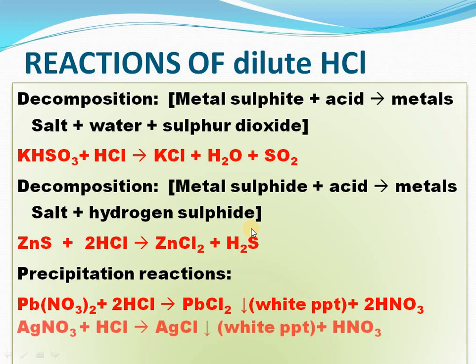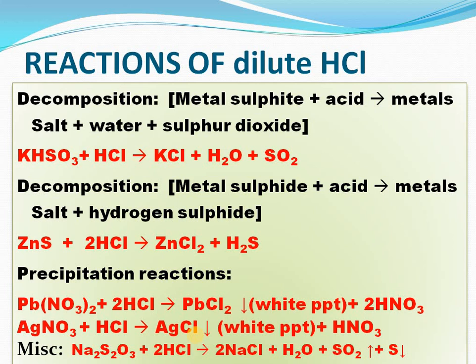Precipitation reactions: Pb(NO₃)₂ + HCl → PbCl₂ (yellow precipitate); AgNO₃ + HCl → AgCl (white precipitate). Note that AgCl is insoluble in any mineral acid but soluble in ammonium hydroxide solution. Also, Na₂S₂O₃ + HCl → NaCl + water + SO₂ + S. This is a special reaction producing four products — SO₂ is colourless and suffocating, and sulfur gives a yellow colloidal solution.